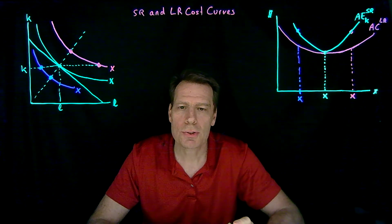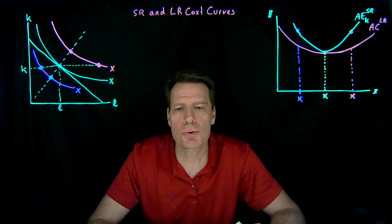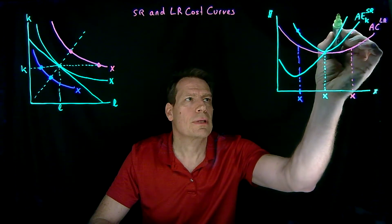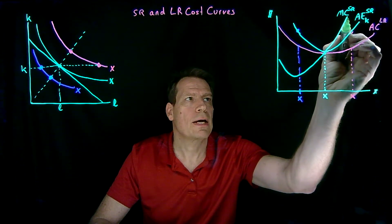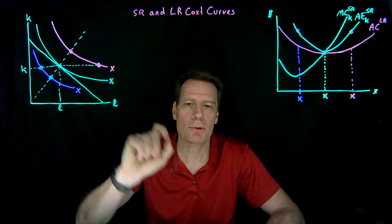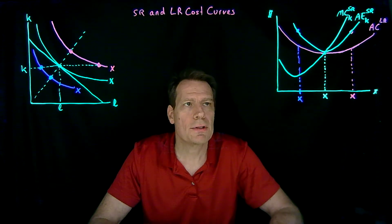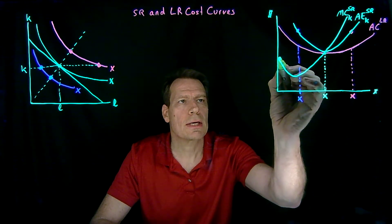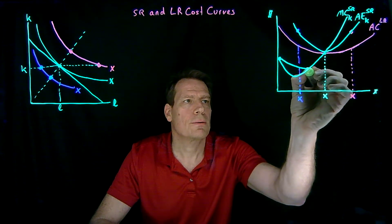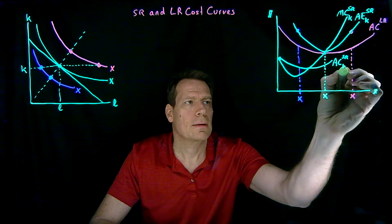Short-run marginal costs have to cross short-run average curves at their lowest points. So if I include in this picture the short-run marginal cost, it'll look something like this, where it has to cross at that lowest point. That'll be my marginal cost in the short run when I have the fixed level of capital that's exactly the right amount to produce the output level x. So now we have the short-run marginal cost curve running through that lowest point, and we can include the short-run average cost curve, which will fall while marginal cost is underneath it and then rise.